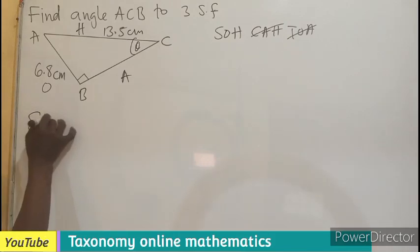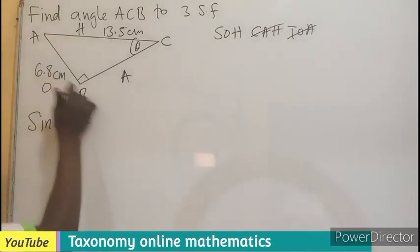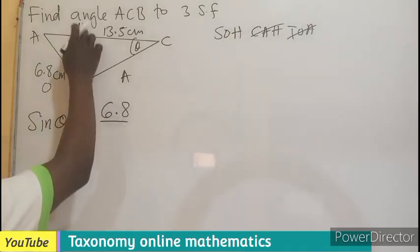So I will be having the sine of the angle is equal to the opposite side divided by the hypotenuse. So it is 6.8 over 13.5.